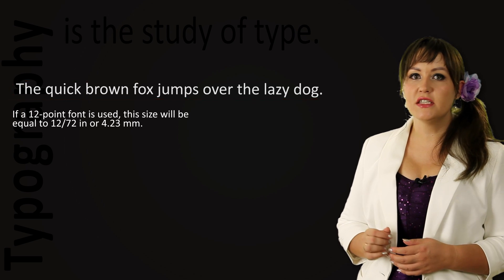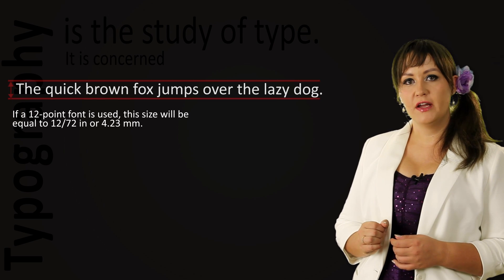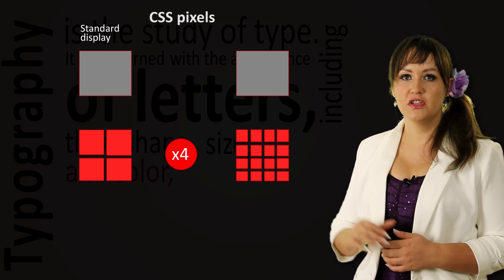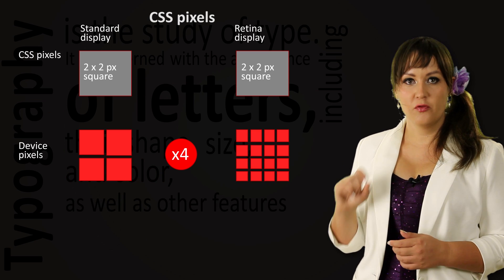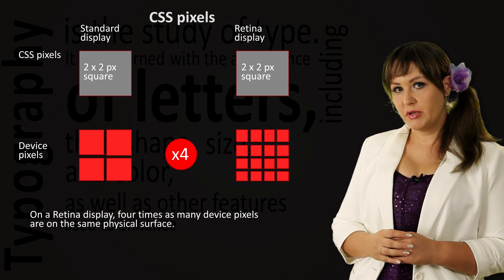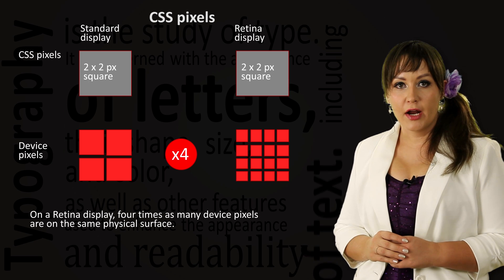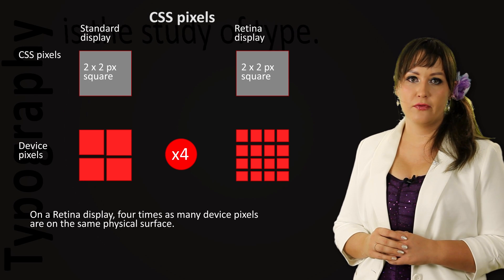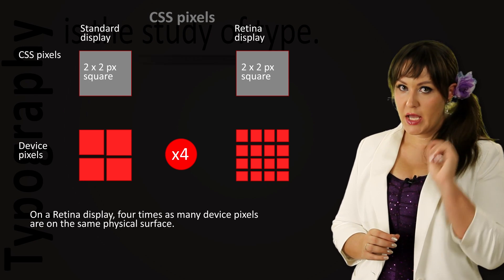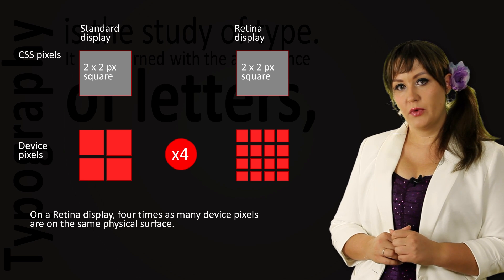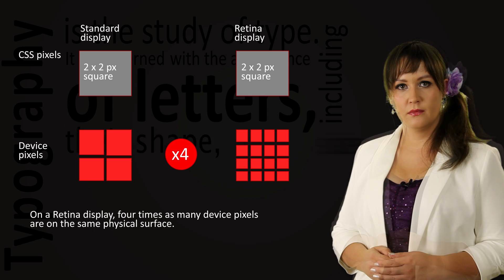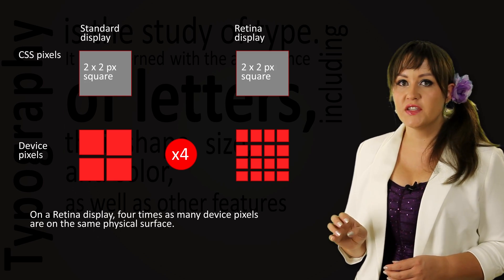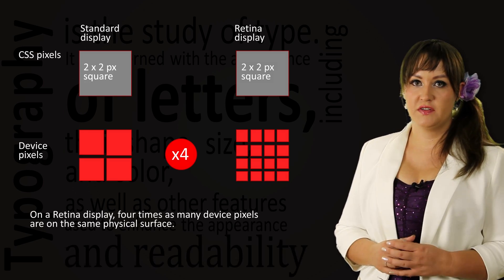In some cases in web design, points can be defined based on the physical measurements of pica, relative to units of length such as inches. However, both points and picas can also be defined relative to the size of a pixel as defined by a particular website. In this case, the pixel is called a reference pixel or CSS pixel.